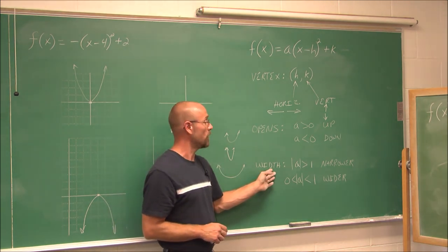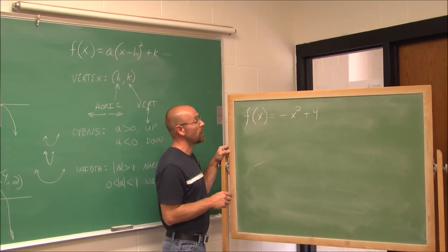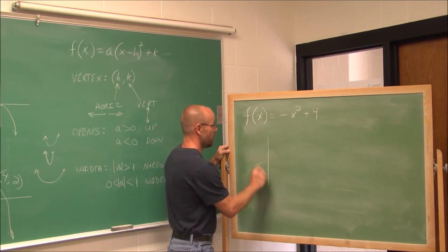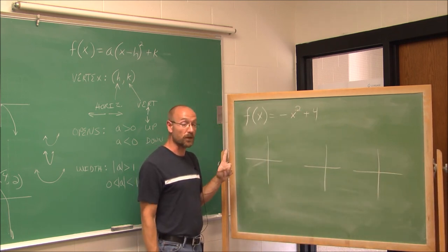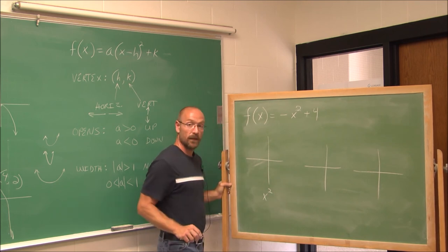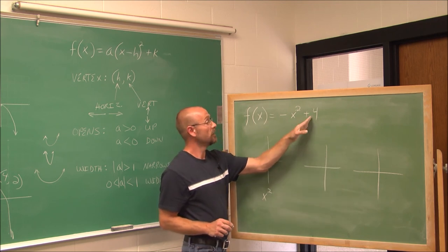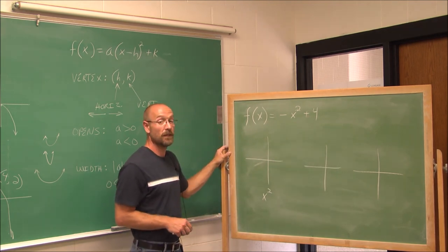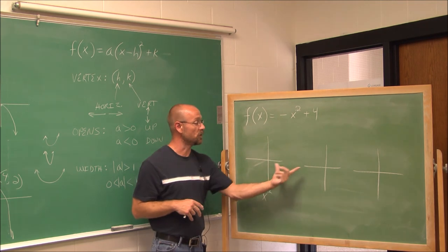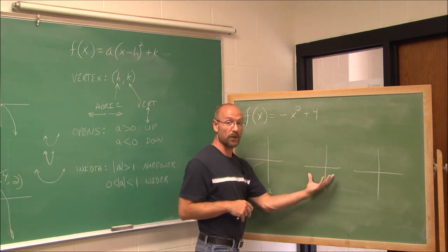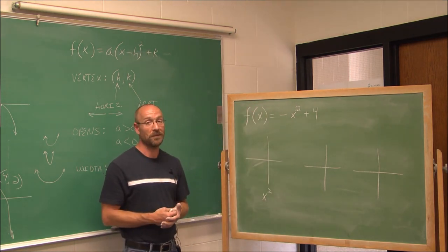Here's an example for you to try. Draw out three graphs: first the library function, then apply the reflection, then the final transformation. Determine whether it's a horizontal or vertical transformation. Make sure you do three graphs: the library function, your first translation, and your final translation. Try that yourself. This has been section 9.1 — thank you for watching.